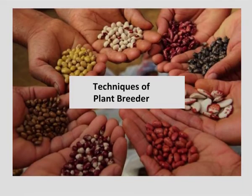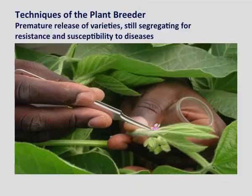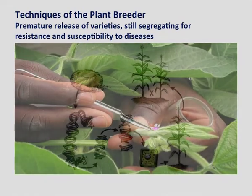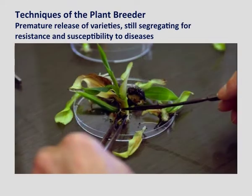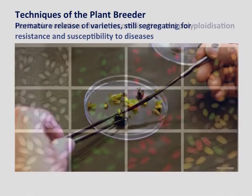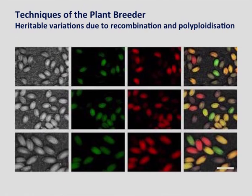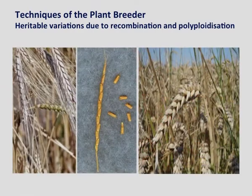The next cause is the techniques of the plant breeder. Serious instabilities may occur in varieties owing to cytogenetic irregularities in the form of improper assessments in the release of new varieties. Premature release of varieties still segregating for resistance and susceptibility to diseases or other factors can cause significant deterioration. This failure can be attributed to the variety testing program. Other heritable variations due to recombinations, polyploidization, and selection may also take place in varieties during seed production, which can be avoided by periodical selection during maintenance of the seed stock.